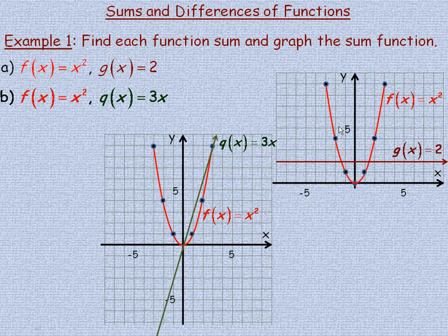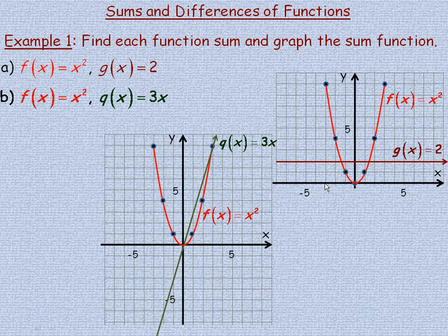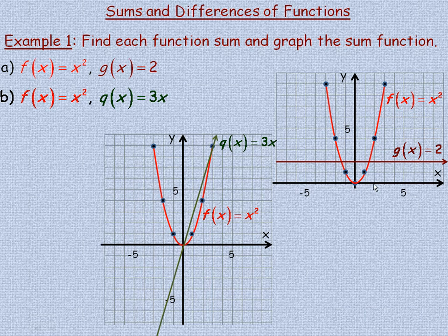I've graphed seven points here. They all come from squaring a certain x value to get the particular y coordinate. For example, the x coordinate is negative 3 and if you square it you get positive 9, so negative 3, 9 is on the graph. This is the point 2, 4 because 2 squared is 4, so 2, 4 is a point on the graph.